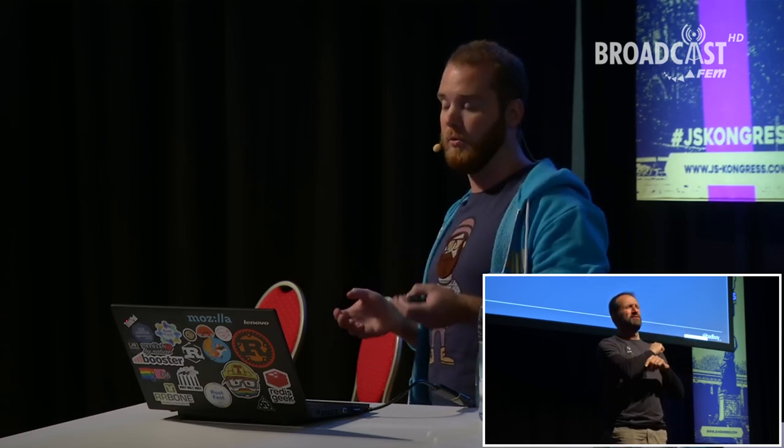They took the ideas they had from Flash and Java and built web APIs into the browser so they could be used from JavaScript. But JavaScript was still not the fastest thing in the browser. This changed in 2008 when V8 was released — a new engine that JIT-compiled code and ran it much faster in the browser.